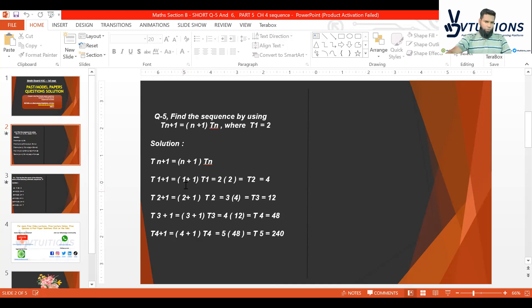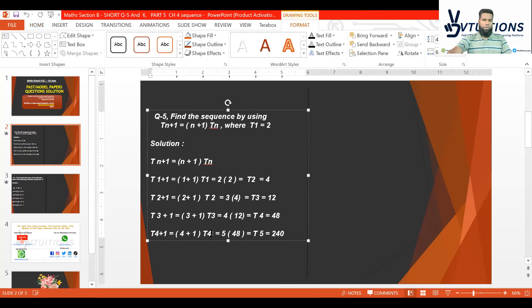Now see, I'm putting values: one here, two here, three here, four here, right? I just replaced n up to four, nothing else. The formula is as it is. In place of Tn, we have T1, T2, T3, T4. This is how this question is solved. Do you see it here?